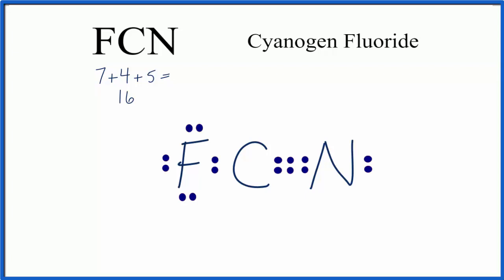If you look at the formal charges, each element in this compound has a formal charge of 0, which makes this a more favorable structure. If we put the triple bond between F and C instead, we'd end up with a formal charge of +2 on F and some negative formal charges. That would not be as good a structure as having them all at 0.